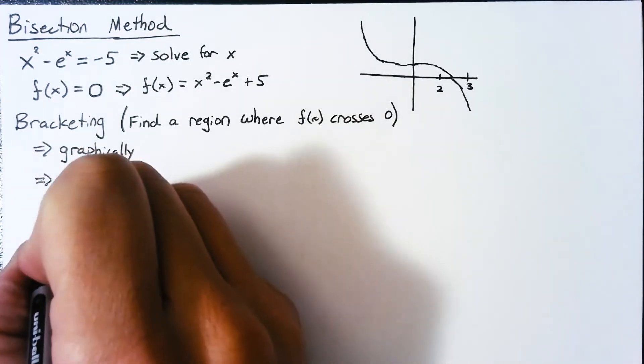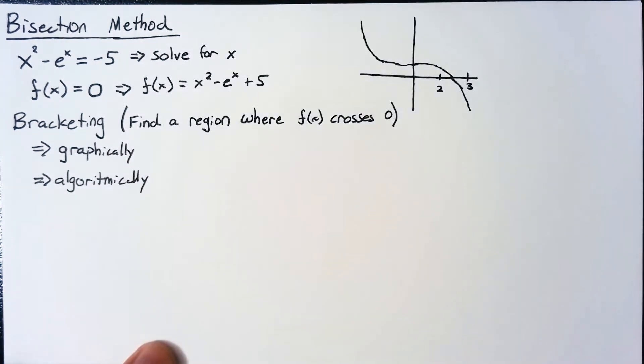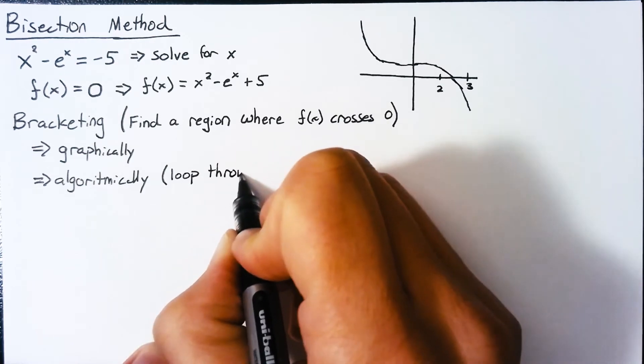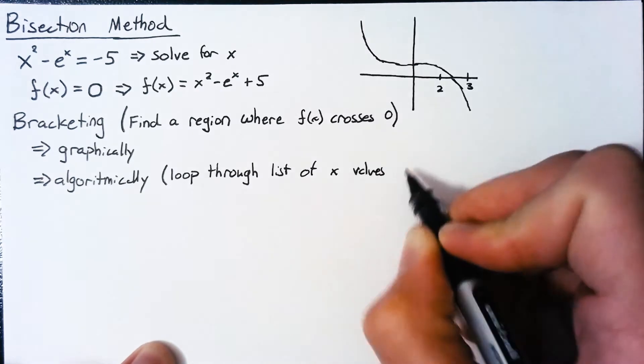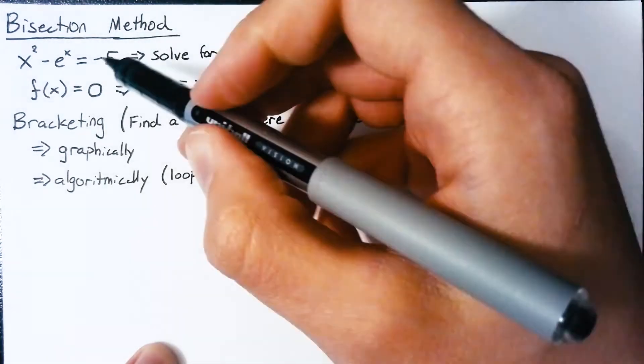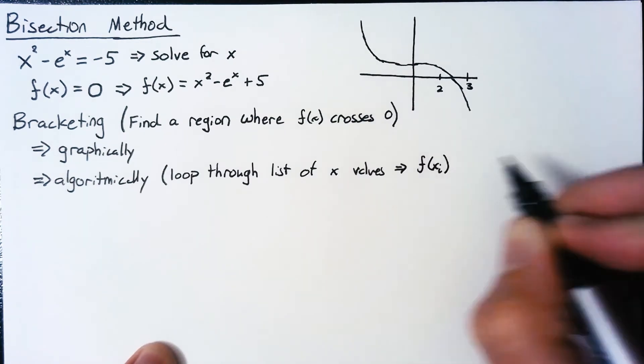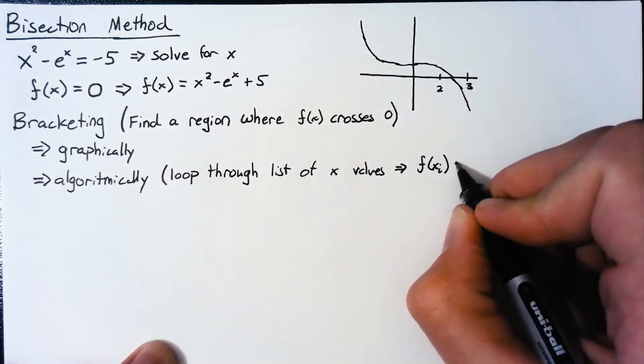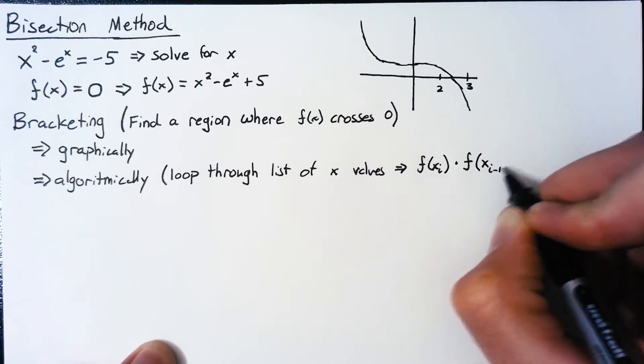Now, we don't actually need to plot this. We can actually just do this algorithmically. And the way we would say this is that we're going to loop through or check an entire list of x values until we find two evaluations of this function. So we would say f of xi to refer to the current position of our x and the position adjacent to that, f of xi minus 1. And we'll multiply those two together.